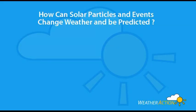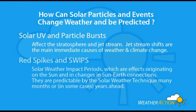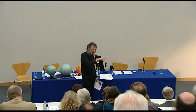We know that solar particles are doing something. We've established that the effects from the Sun come in bursts — we call these red spikes. When there's a group of red spikes, we call them SWPs: Solar Weather Impact Periods. They're about something coming from the Sun, something about motion in the solar wind and its linkages with the Earth.